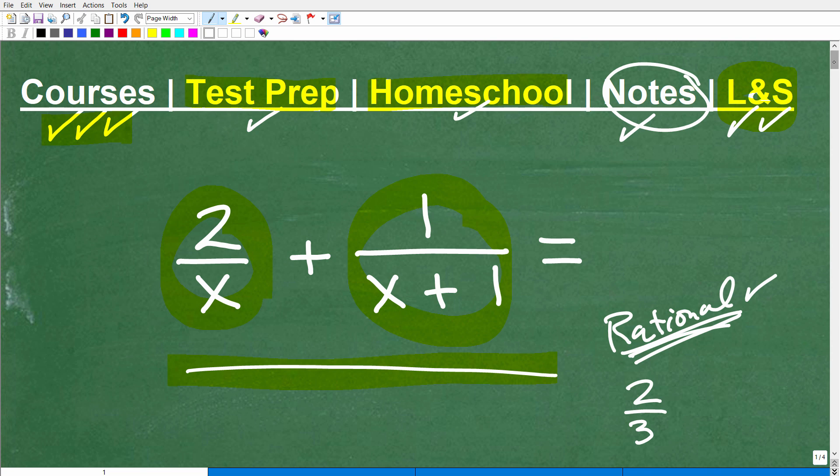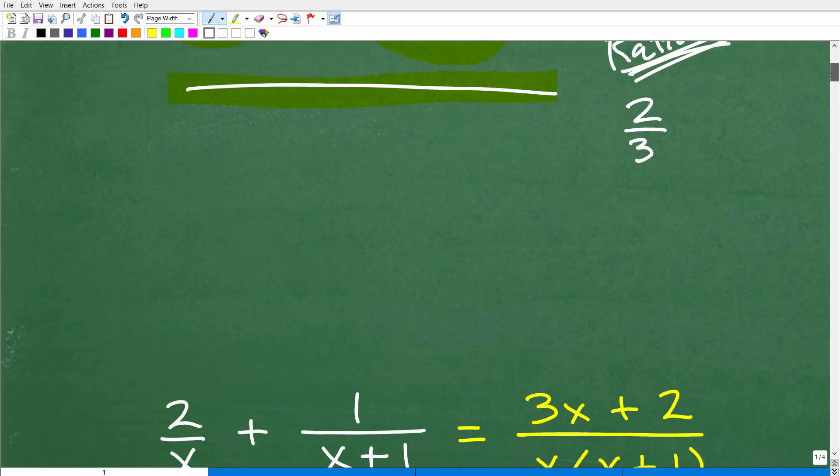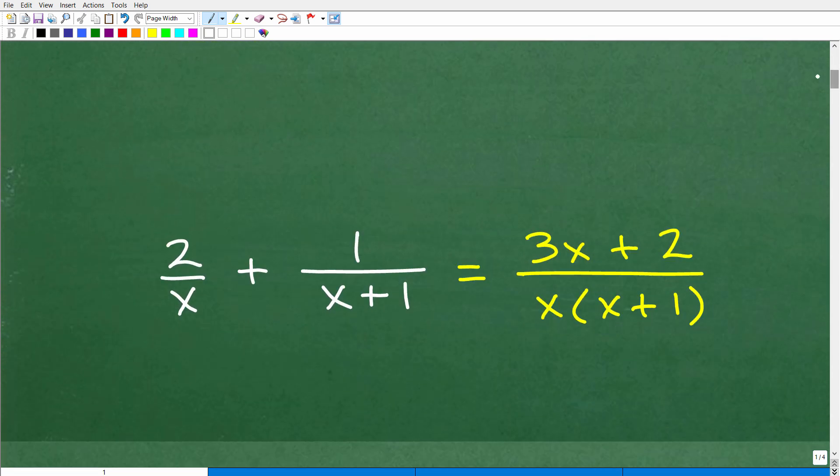Okay, so let's get into this problem and as promised, I'm going to show you the answer. There you go, the answer: we have 2 over x plus 1 over x plus 1, the answer is 3x plus 2 over x times x plus 1. Now if you chose to distribute this x and your denominator is x squared plus x, that's perfectly fine as well. There's no need to do that.